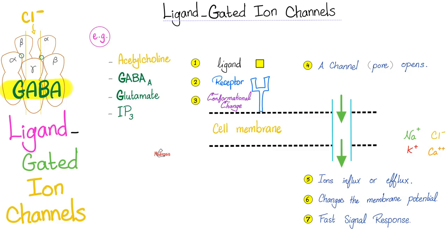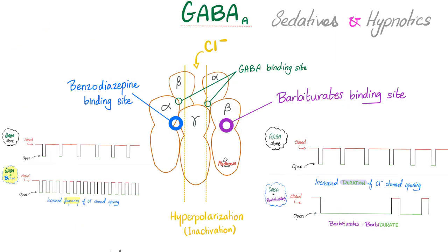Ligand-gated ion channels: this is the story of acetylcholine, GABA, glutamate, and IP3. A ligand binds the receptor, forming a ligand-receptor complex — conformational change occurs, a channel opens, and an ion moves in or out. In the GABA story, chloride enters the neuron. Chloride is negative; when negative charge enters the nerve cell, the cell gets inhibited — causing sedation and hypnosis. This is how benzodiazepines and barbiturates work.